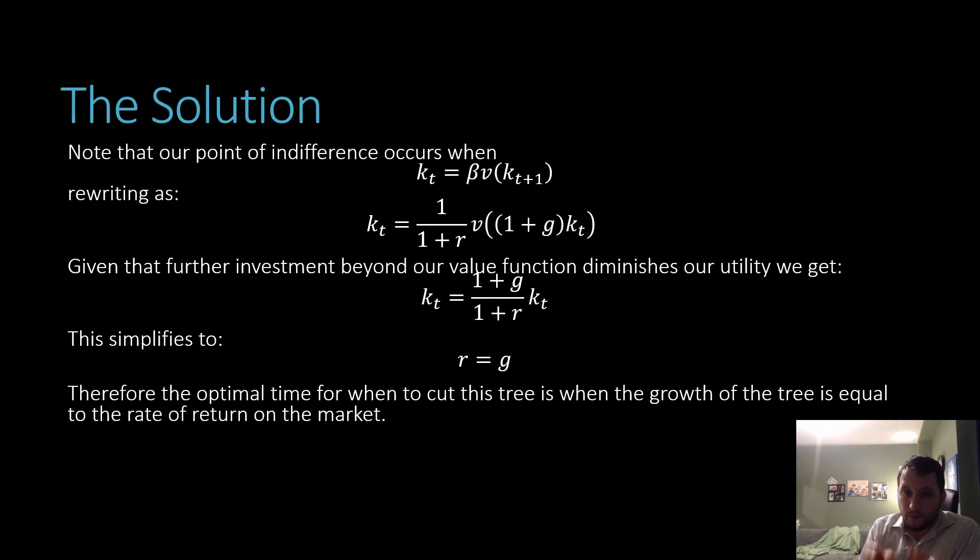Now we get this clean result here, and with a little bit of algebra, just multiplying both sides by 1 plus r and minusing kt from both sides, we get our condition being where our rate of return on the market is equal to our growth rate of our tree. This is when you should decide to cut down your tree.